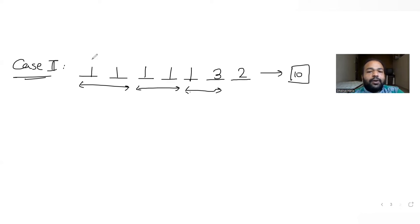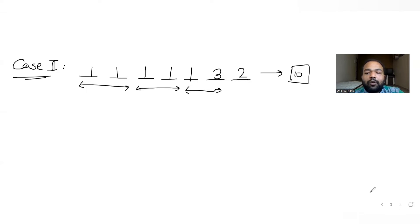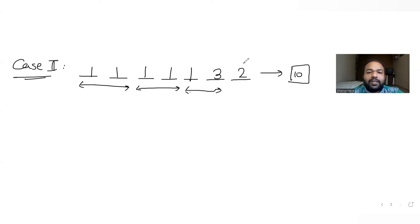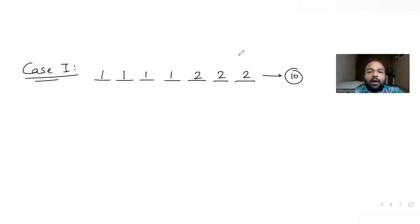If I have two threes, I cannot complete the remaining digits with ones because one slot would be left blank. So I cannot have two or more threes; only one three is possible. If I do not use a three, I can have three twos and four ones — that is case one already covered. So these are the only two possible cases where we get a sum of 10.